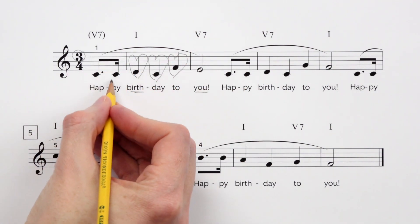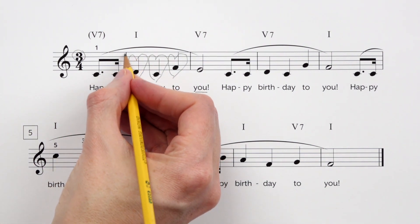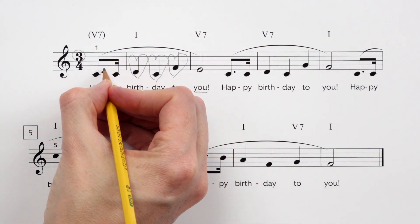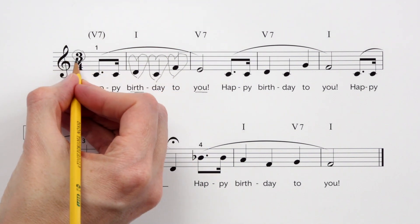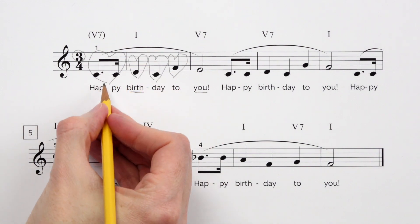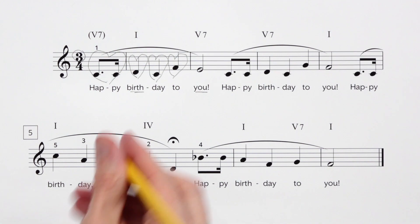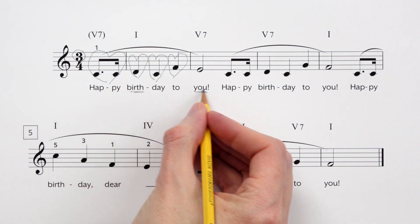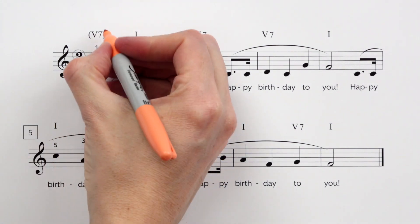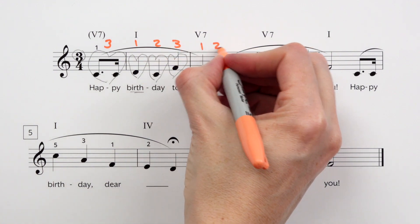So it creates this pattern of strong notes falling on the downbeat, or beat one of the measure. And so here how do we know what beat this is? Well when you have pickup notes you count backwards from the first full measure. We know that this is beat one. What beat comes right before beat one? Well since we're in 3-4 time, this has to be beat three. Happy birthday to you. So that way we have the strong words or syllables on the strong beats. And if we were writing in the counts we'd see beat three, one, two, three, one, two.